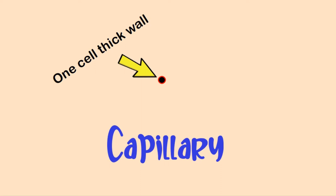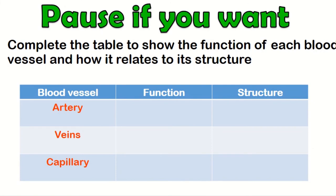Capillaries have walls just one cell thick. This allows oxygen and other substances to diffuse in and out very easily without having to pass through a thick wall. Capillaries are also very small, which means they can get close to individual cells — like using a small one-lane road to reach a destination that a motorway can't access directly. So capillaries let blood get close to body cells and exchange substances efficiently.